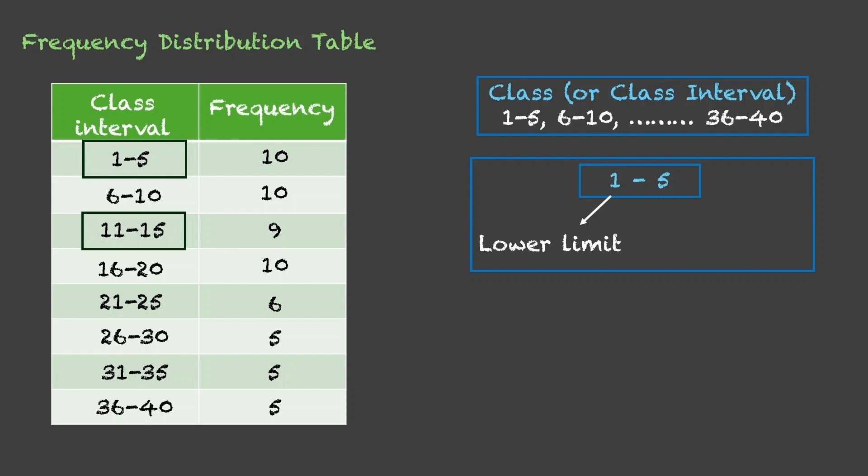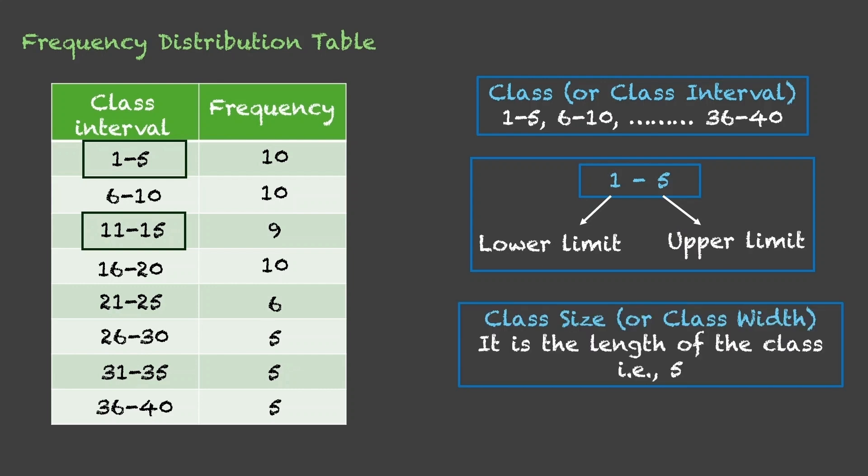In each of these class intervals, the lowest value is called lower limit and the highest value is called upper limit. And the class size or class width is the length of the class, which in this case is 5. Now, we can choose this class width. It's completely up to us and accordingly, these class intervals will change.